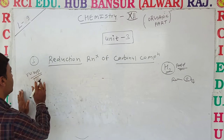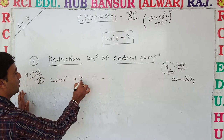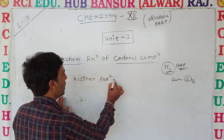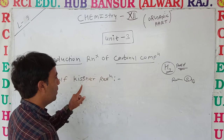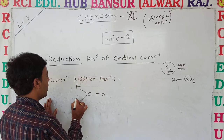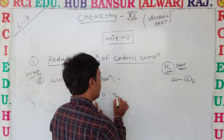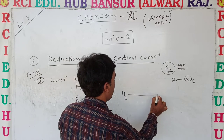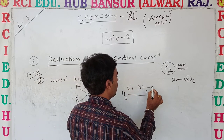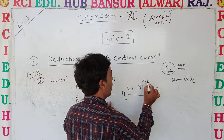The second name reaction is Wolff-Kishner Reduction — named after the scientists Wolff and Kishner. This is also very important. In Wolff-Kishner Reduction, the same carbonyl compound (C double bond O) — whether a ketone or aldehyde — is treated with hydrazine (N2H4) and sodium ethoxide (C2H5O-Na).